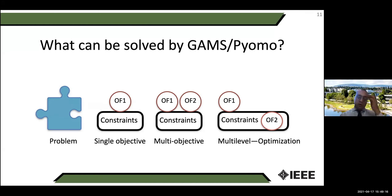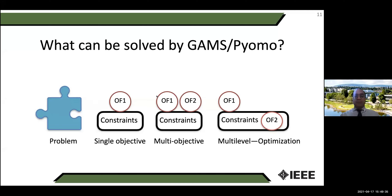These tools can handle different types of optimization, but they are not magicians. In power systems we have a lot of decision variables, which means solvers can have a difficult time finding the optimal solution. You have to formulate the problem efficiently.